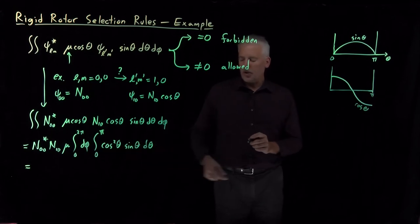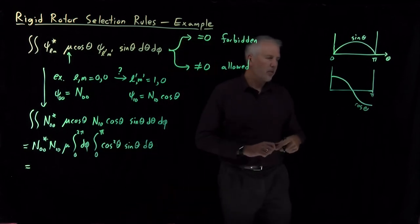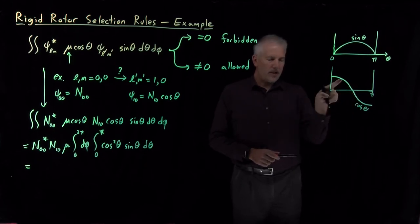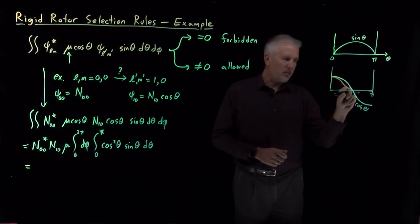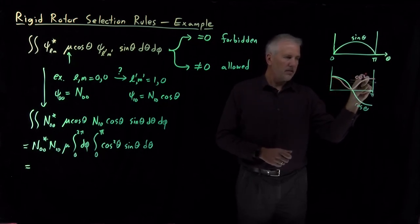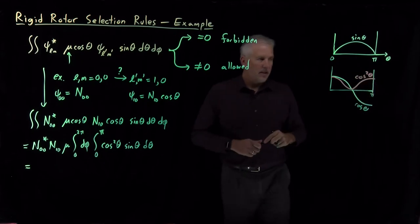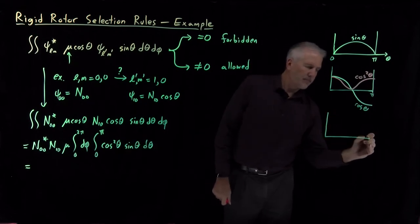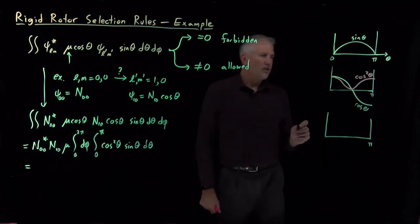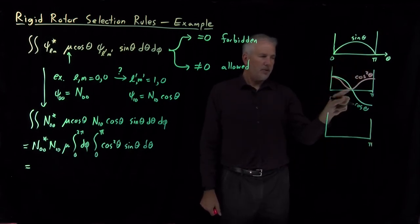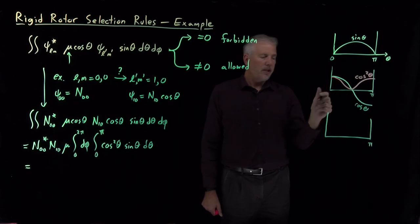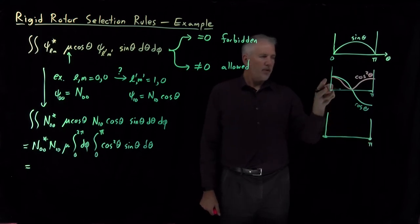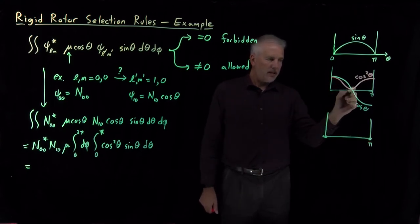We're not interested in cosine, we're interested in cosine squared. So if I square cosine, it's still zero where the function is equal to zero, but both the negative and the positive portions of this function become positive. So that cosine squared looks something like this. And then what we're really interested in is this product cosine squared times sine.